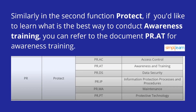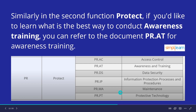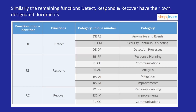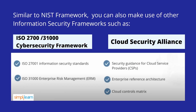Similarly, the remaining NIST functions — Detect, Respond, and Recover — each have their own designated documents. Beyond the NIST framework, you can also make use of other information security frameworks such as ISO 27001 or the Cloud Security Alliance.